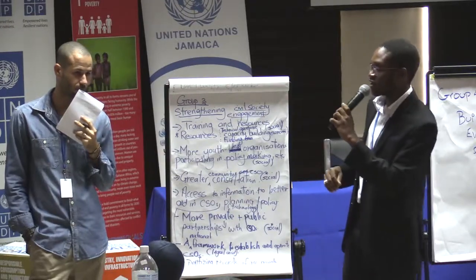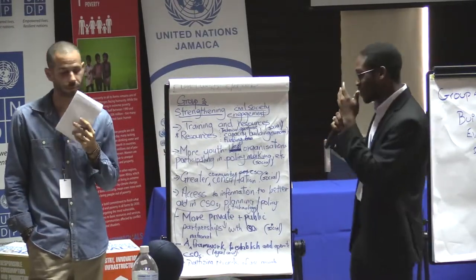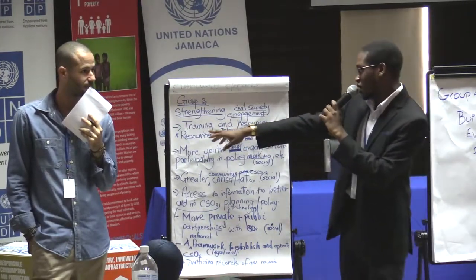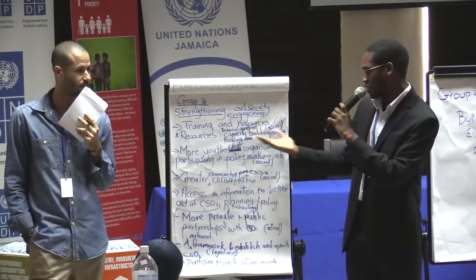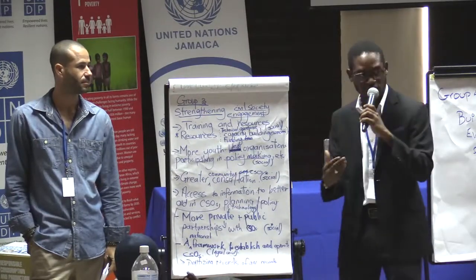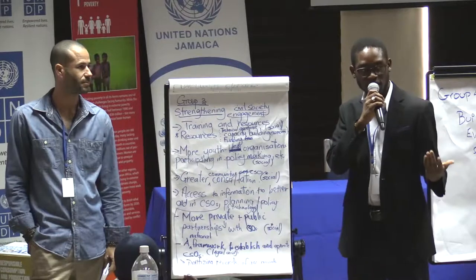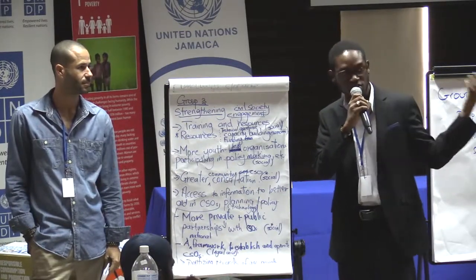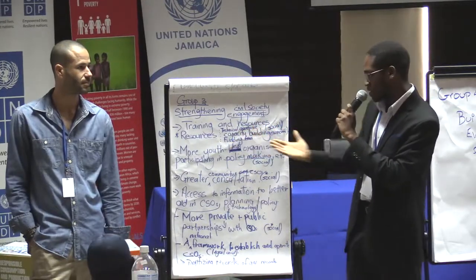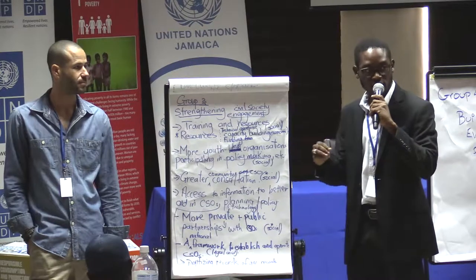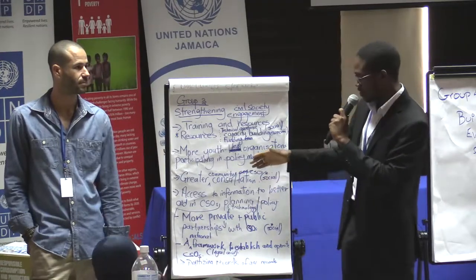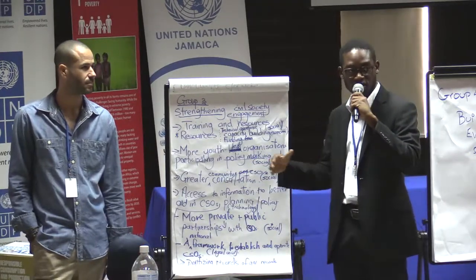On youth-led organizations participating in policy making: like other groups, we agree there needs to be less tokenism and genuine youth involvement in the nitty-gritty of policy. On technology and resources: we need more training and capacity building for CSOs. When we go into communities and people say they need a farm to address SDG 3, for example, we should be able to provide technical assistance and funding — the community itself gets involved in the SDGs, with the CSO facilitating rather than doing everything for them.